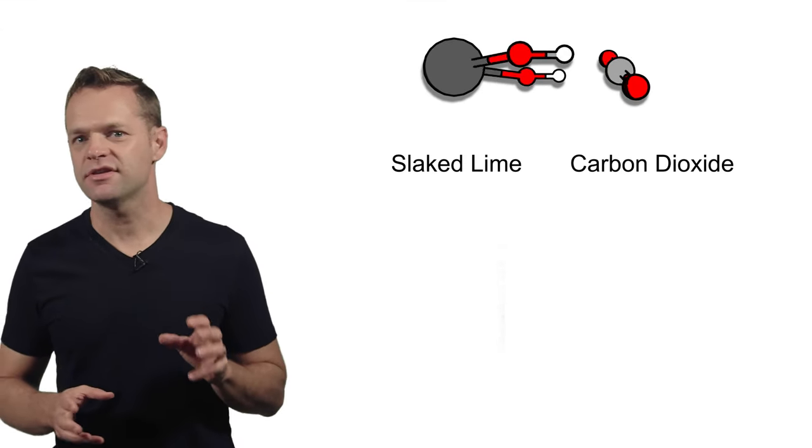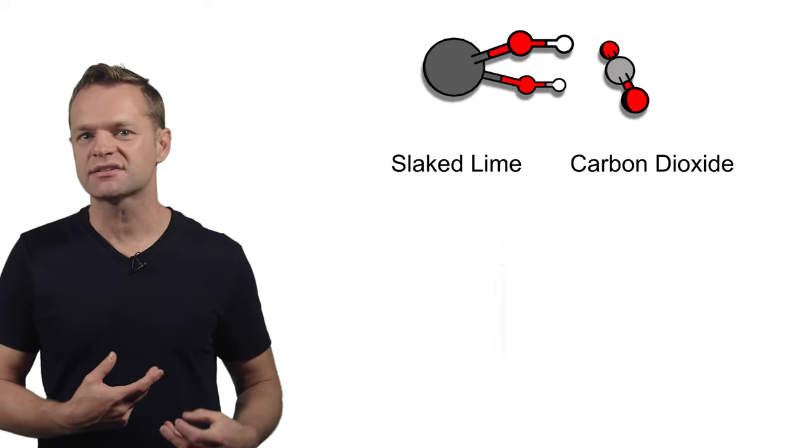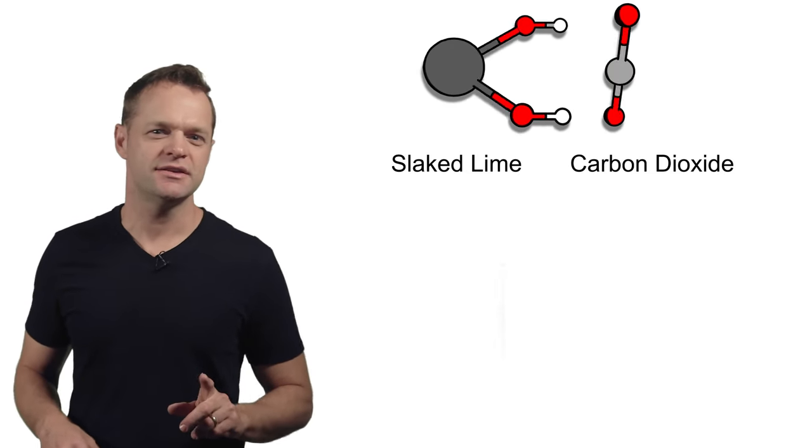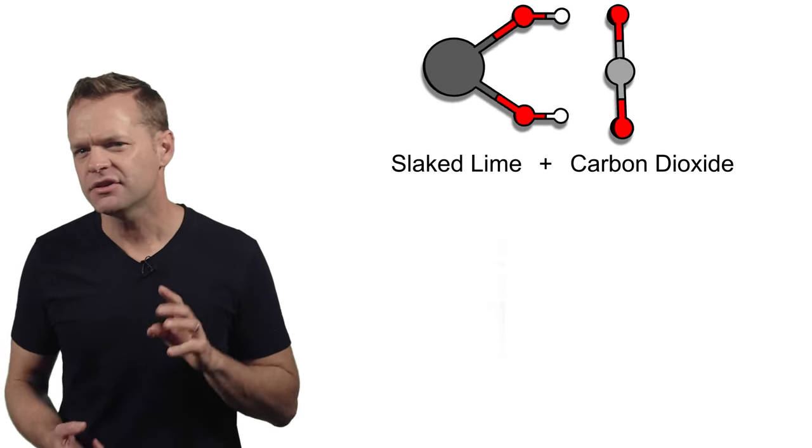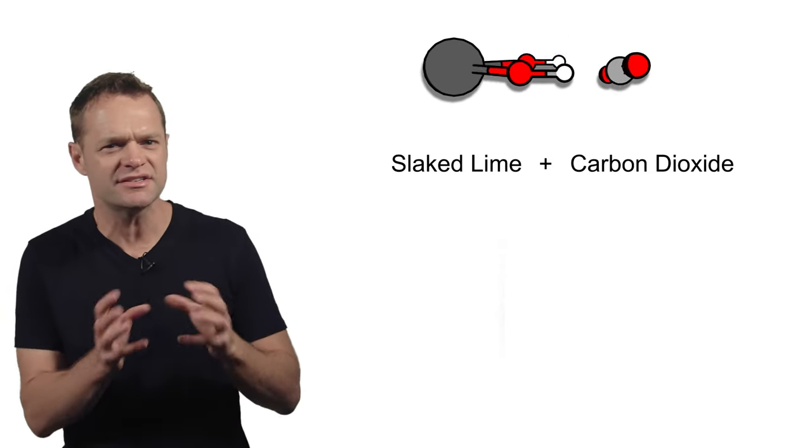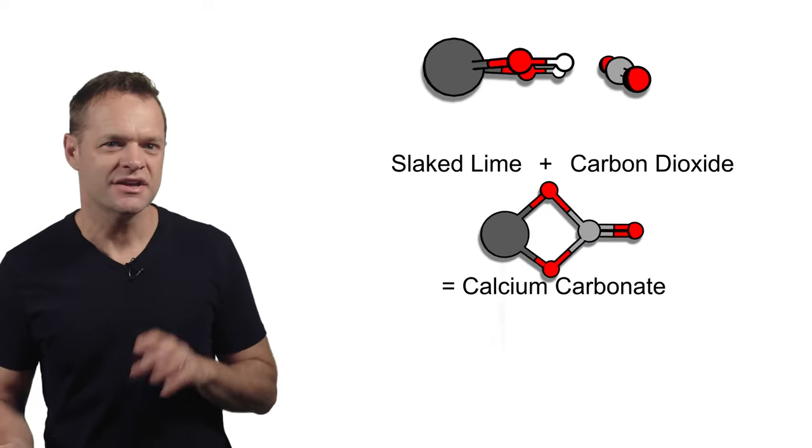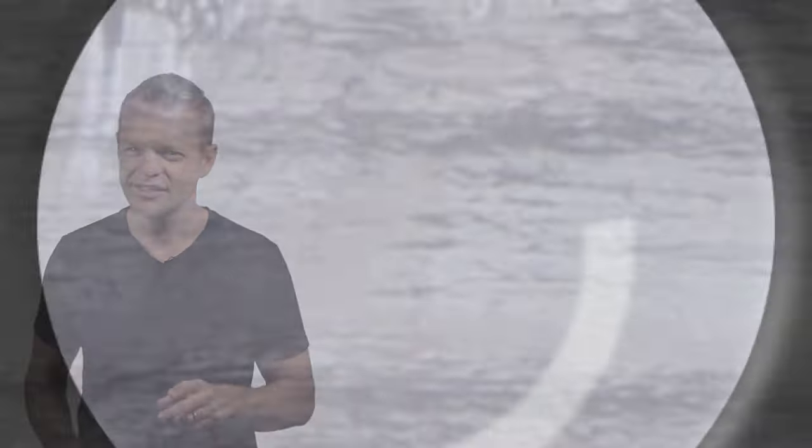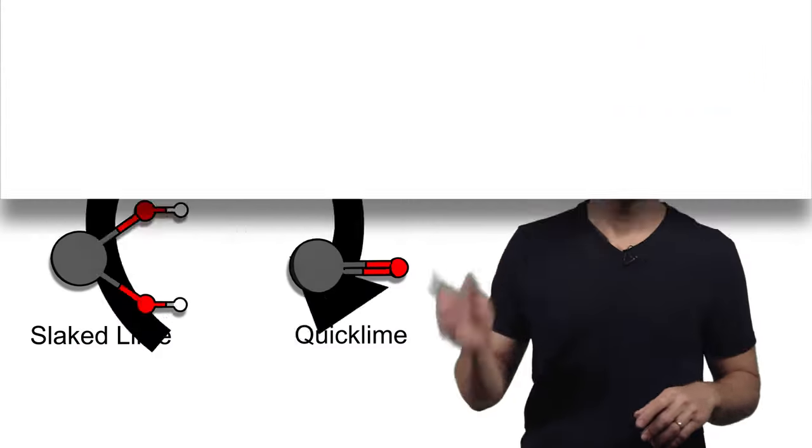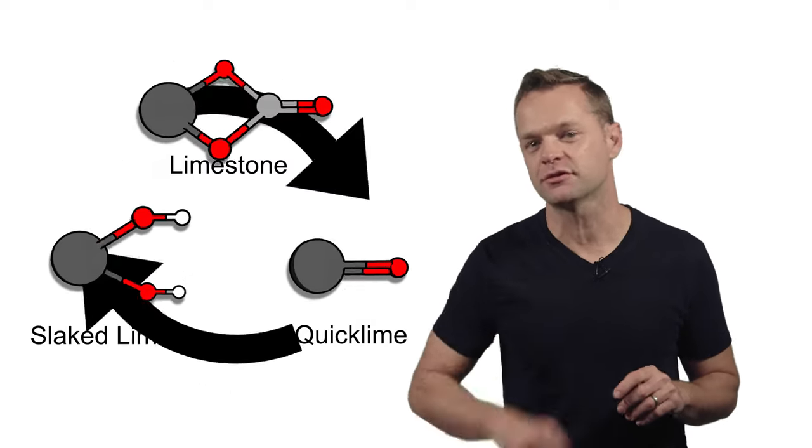As the slaked lime within the plaster mixture continues to heat up, it reacts to the carbon dioxide in the air. Here's what amazes me. As this carbon dioxide is reintroduced into the slaked lime, the lime begins to harden and creates these crystals. These crystals are calcium carbonate or CaCO3. Does that look familiar? It should. It's limestone. Yep, you guessed it. We have come full circle back to the original molecular structure we started with. We are back to limestone.